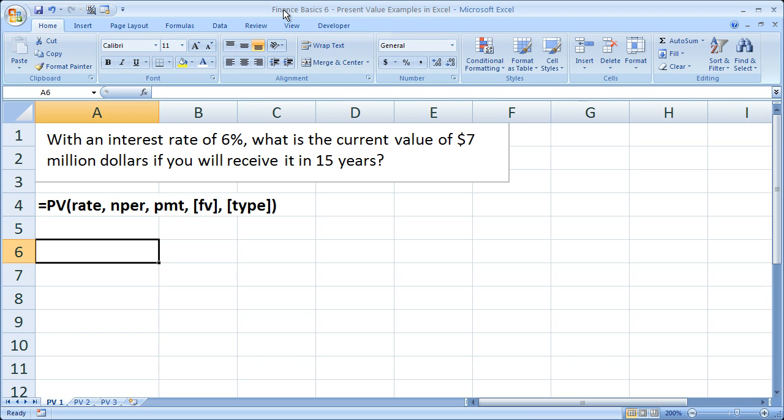The first question is very basic: with an interest rate of 6%, what is the current value of 7 million dollars if you will receive it in 15 years? This is sort of a typical example - what's worth more, so much in the future or so much now? So let's figure out what it's actually worth in today's dollars using only the interest rate.